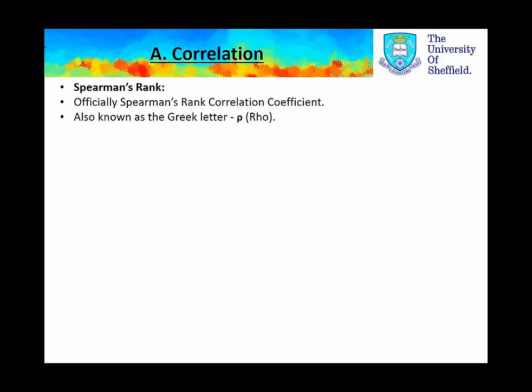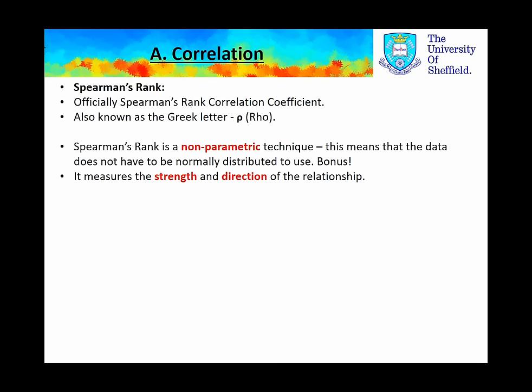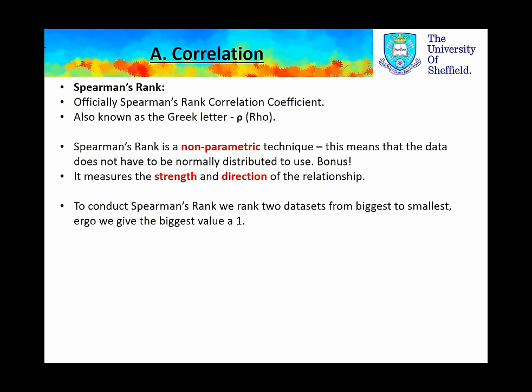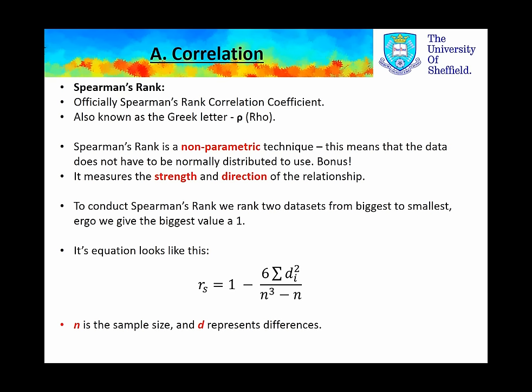We learned two different methods for determining correlation. The first is the Spearman's Rank method. This is a non-parametric technique, which means that the data does not have to be normally distributed to use. It measures the strength and direction of the relationship. To conduct Spearman's Rank, we rank two data sets from biggest to smallest — giving the biggest value a rank of 1. The equation takes the sum of the squared differences between the ranks, multiplied by 6, divided by the sample size multiplied by the sample size minus 1, and then subtracts this value from 1. We'll step through this slowly in an example today.